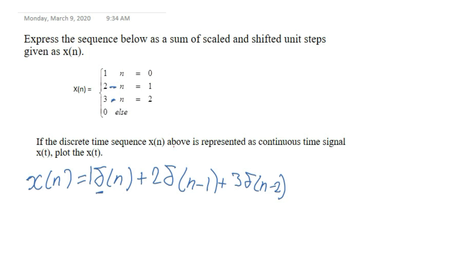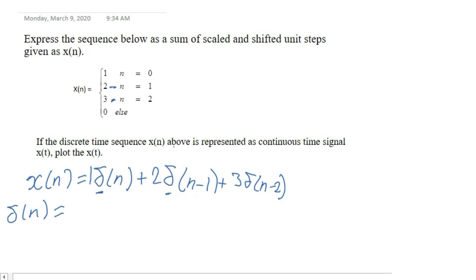Let's now represent this impulse signal into a step signal. The step signal relationship is: sigma of n equals u of n minus u of n minus one.